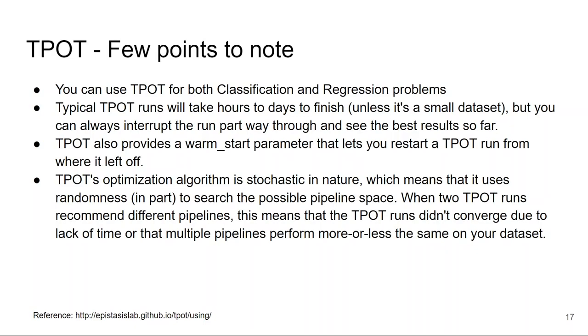TPOT optimization algorithm is stochastic in nature, which means that it uses randomness to search the possible pipeline space. For example, when two TPOT runs recommend different pipelines, this means that TPOT runs did not converge due to lack of time, or that multiple pipelines perform more or less the same on your dataset. So make sure that you give enough computational resources and enough time so that TPOT converges to a single solution.